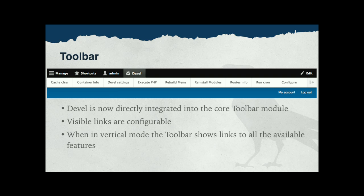The first major Drupal 8 integration point is the toolbar module. Devel surfaces a new top-level item in the toolbar. If you click on that, you have slightly different behavior depending on how your toolbar is set up. If it's in vertical mode, you can expand and see all of the major pages that Devel offers — that's a really good way to see all you can do with Devel. In horizontal mode, just hover over that and your expanding menu comes down.